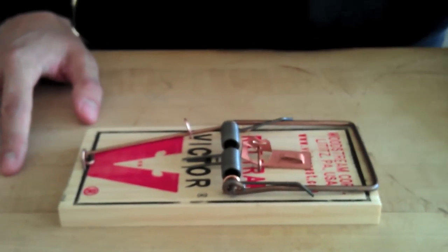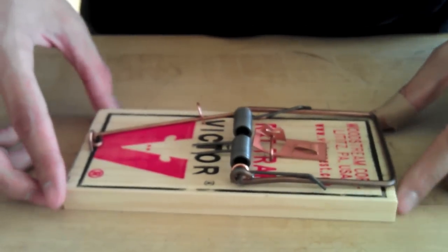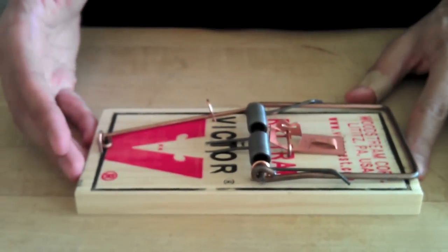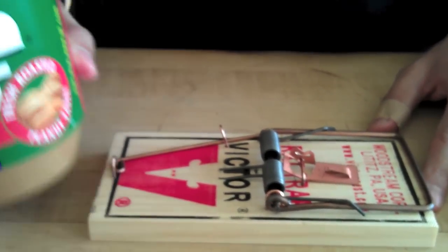Hi, this is how we make a rat trap and effectively catch a rat. Okay, so we're going to use this rat trap right here, and we're going to use peanut butter as bait.